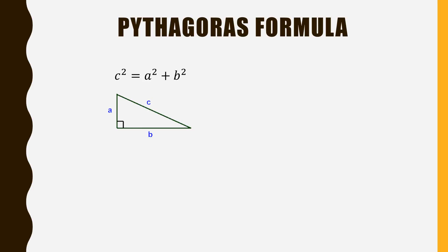Here is the Pythagoras formula: C squared equals A squared plus B squared, where C is the hypotenuse and A and B are the legs. The hypotenuse is the longest side in any right triangle.